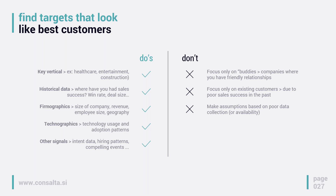When we try to build an ICP, we first look into targets that look like our best customers. Key verticals — based on what we're selling, is there a success that is much more significant in a specific industry, or do we have a focus with our solution on a specific industry? If we're just starting with something new, it's hard to judge. Then we need to look at who our competitors are targeting, historical data, where we've had sales success, what was the win rate, what was the deal size. Firmographic characteristics: size of the company, revenue, employee size, geography.